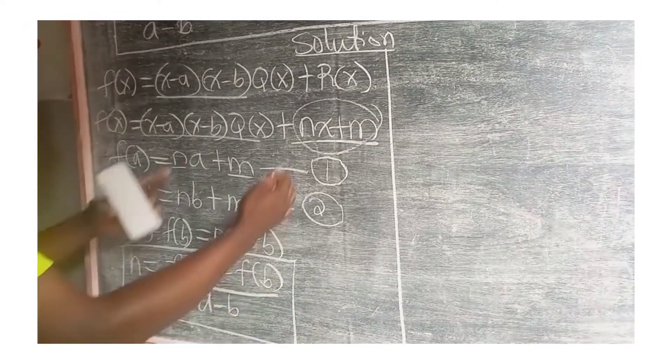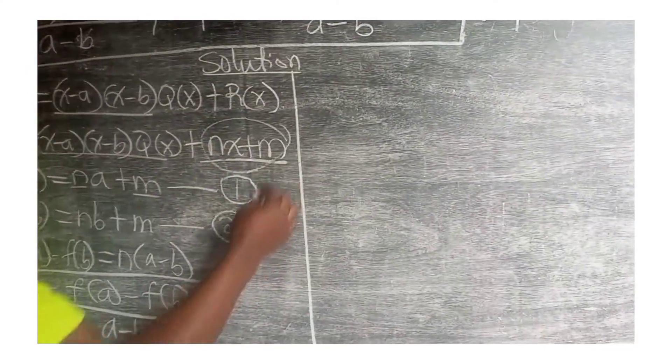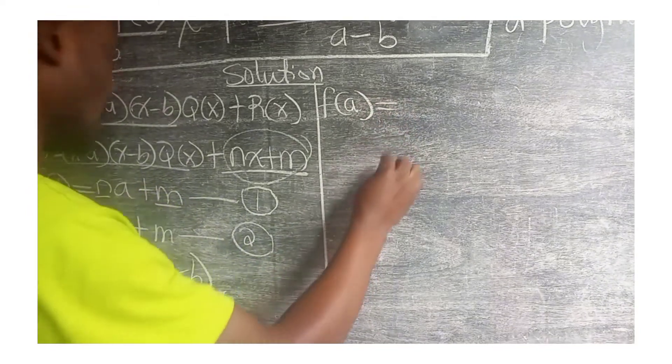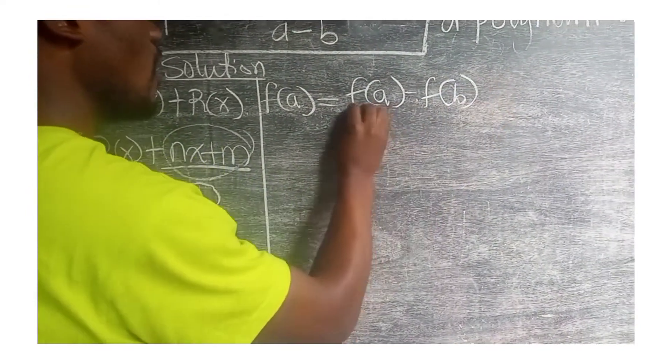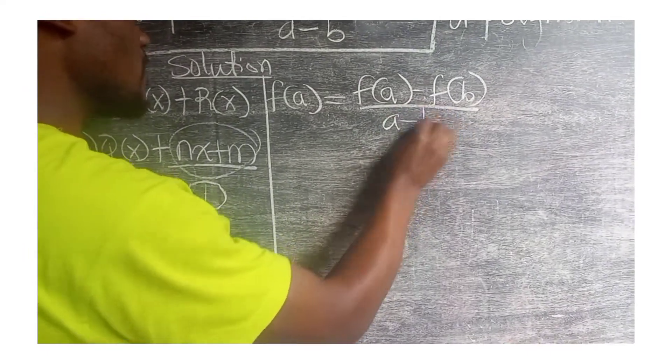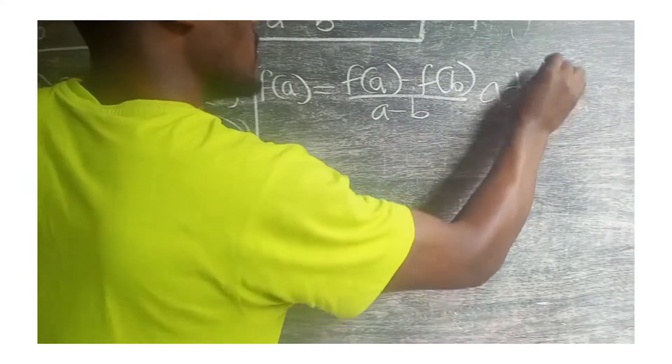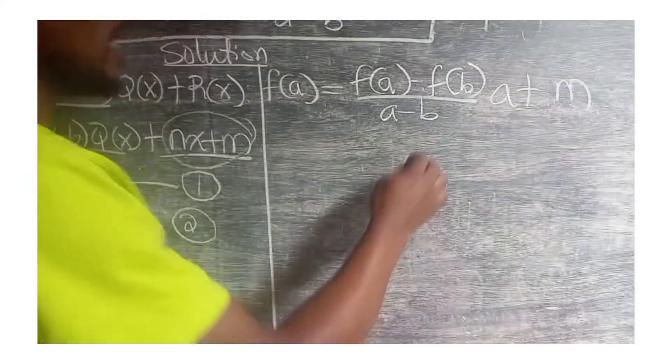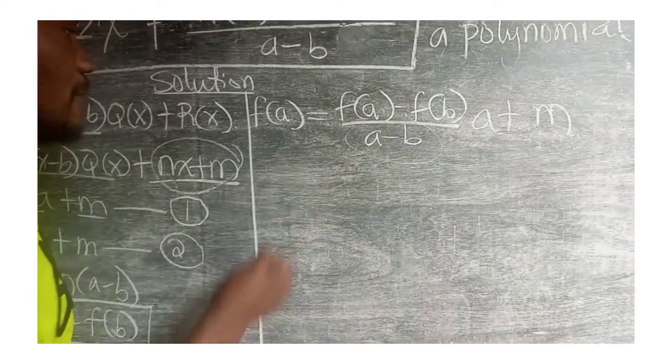We now substitute our n in any of the equations to obtain m. Putting in equation 1, we are going to have f(a) equal to n is [f(a) - f(b)]/(a-b) times a plus m. You see that from here, we can make m the subject. Making m the subject, we start by multiplying both sides by a-b.